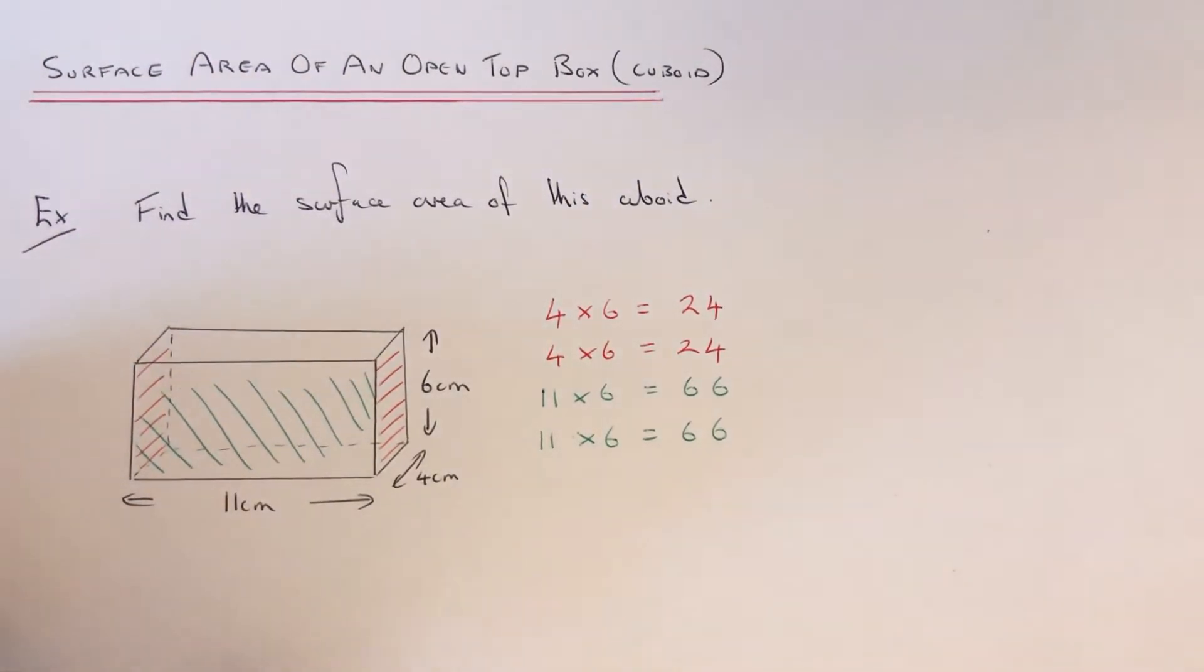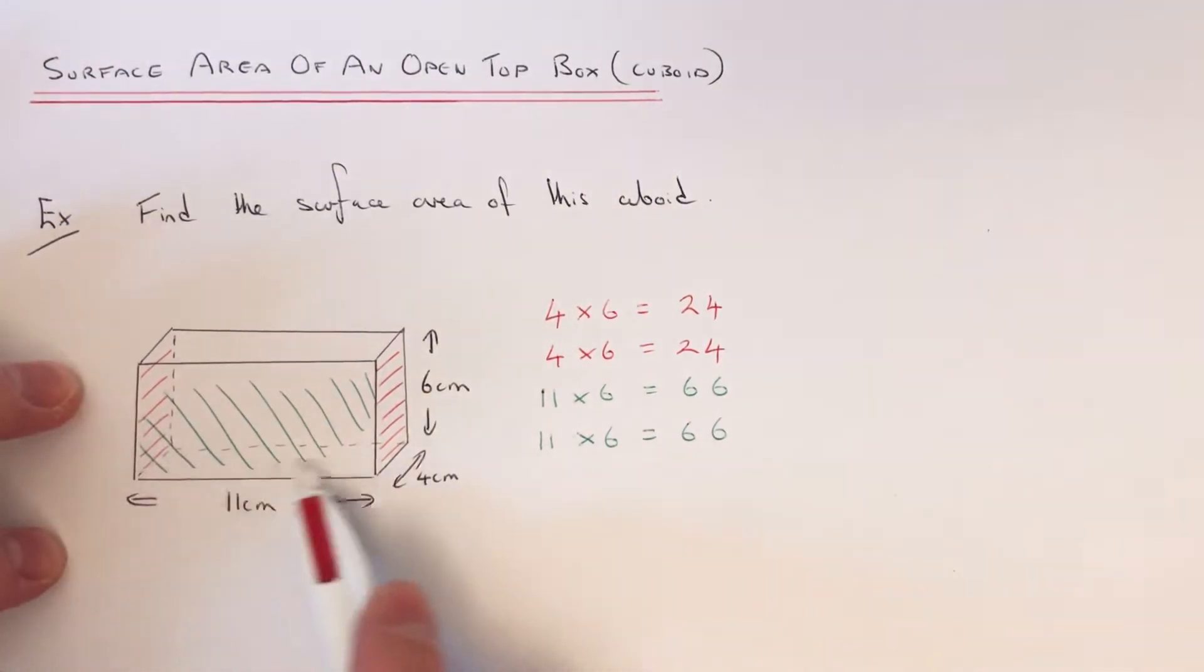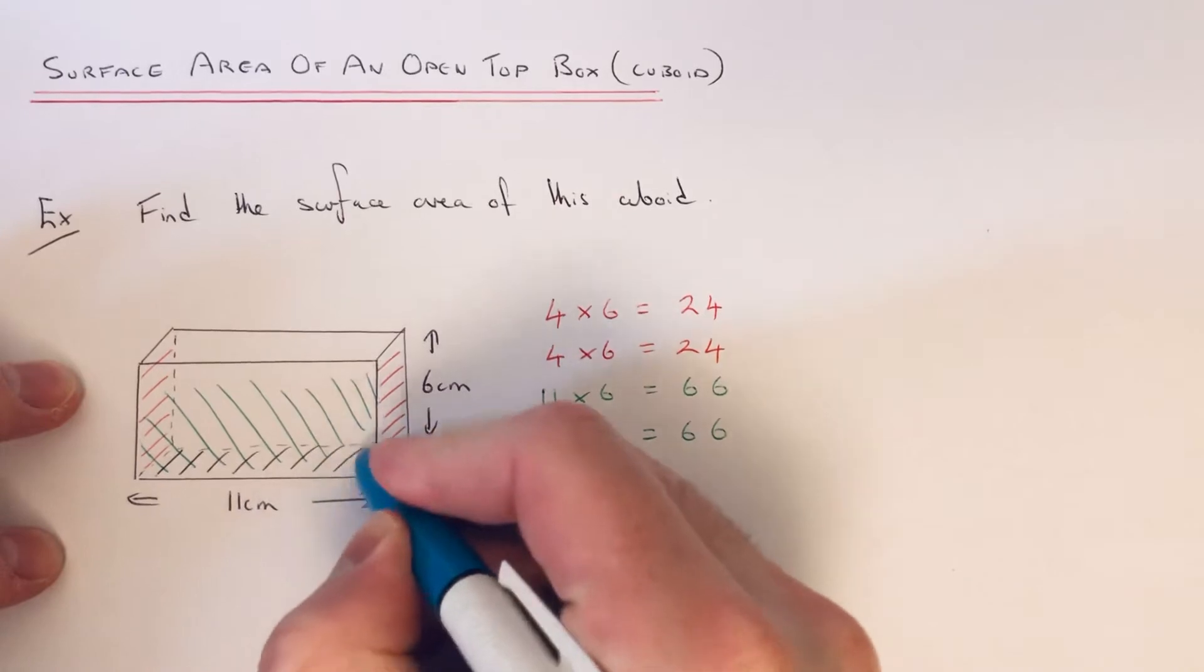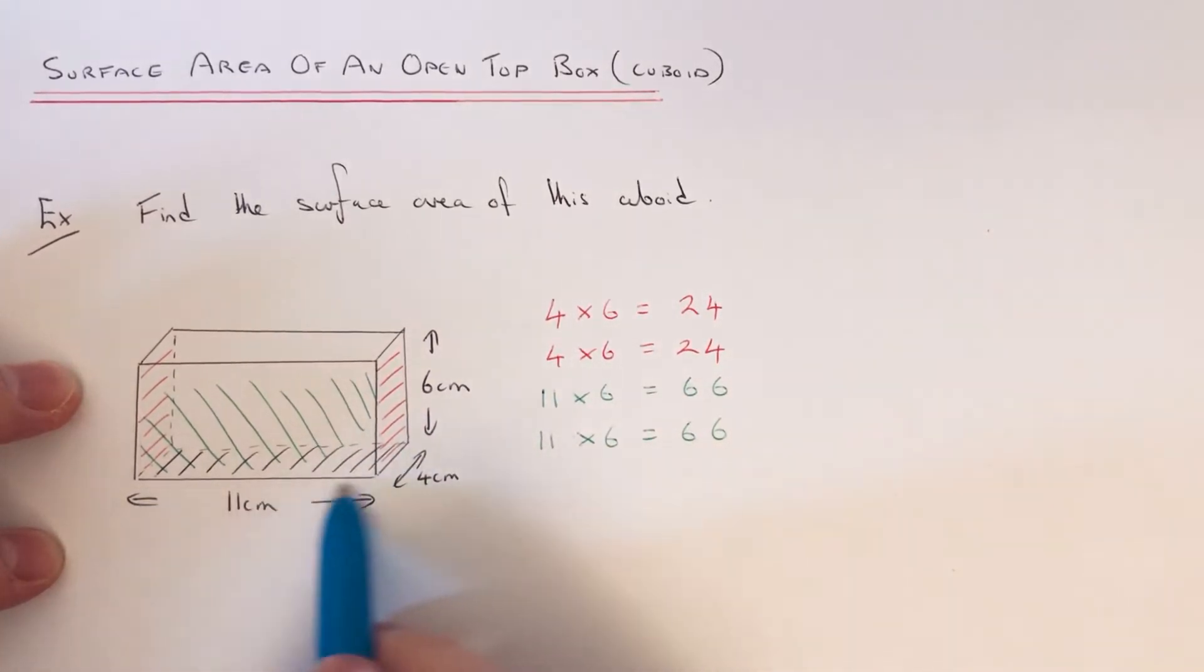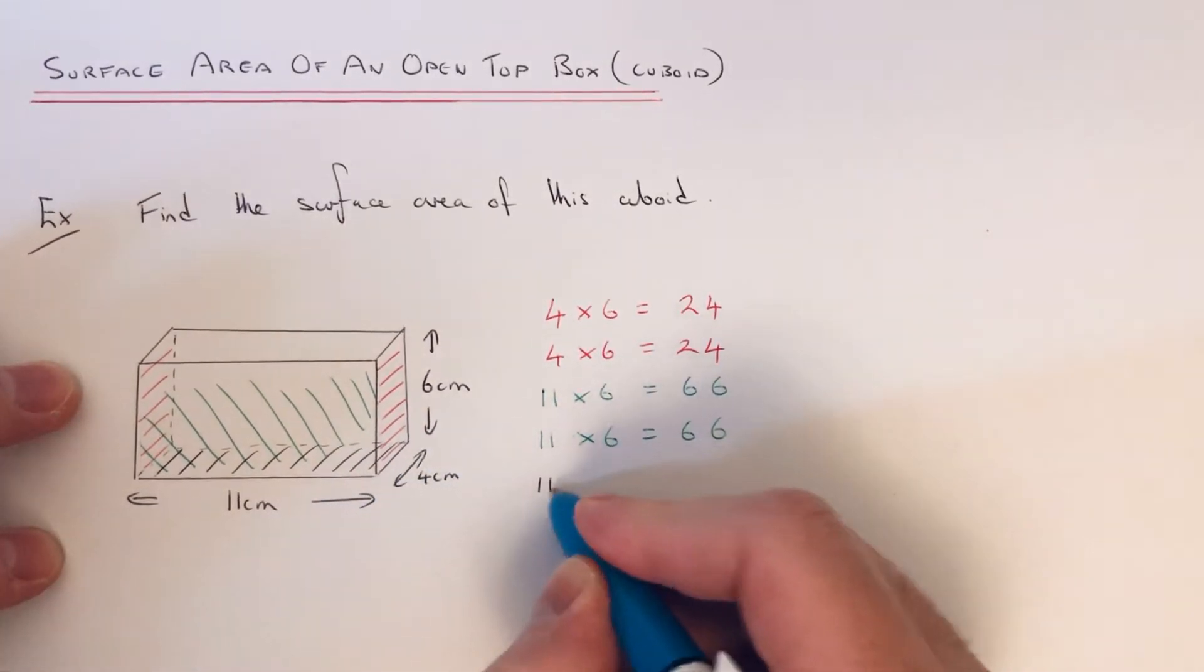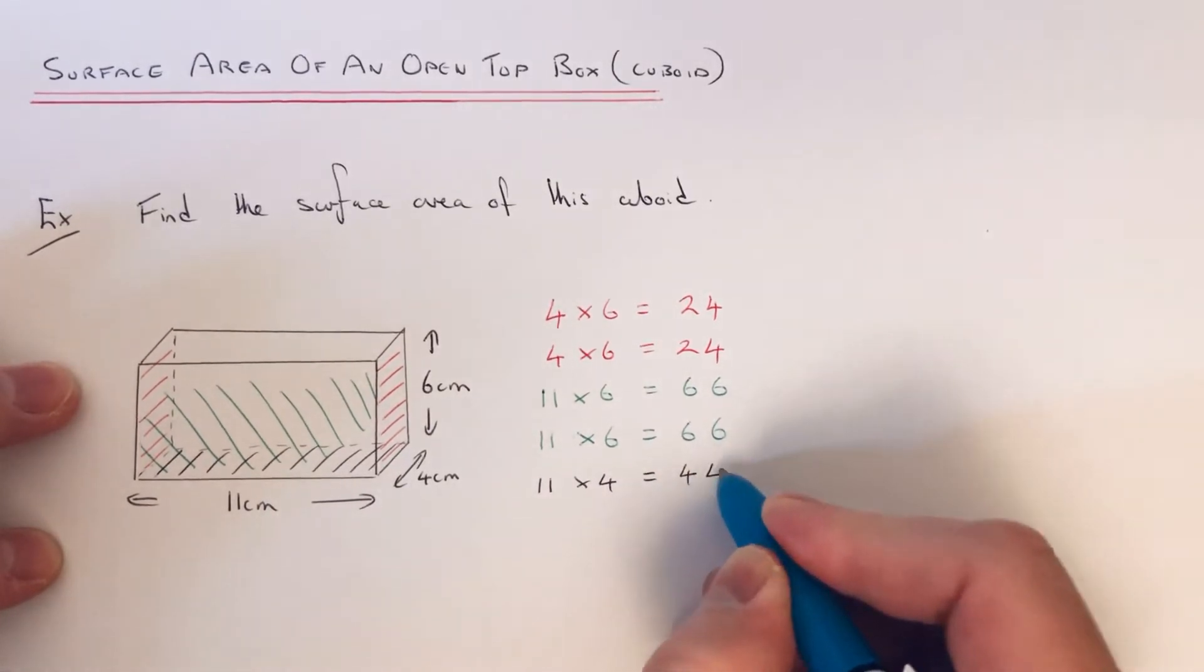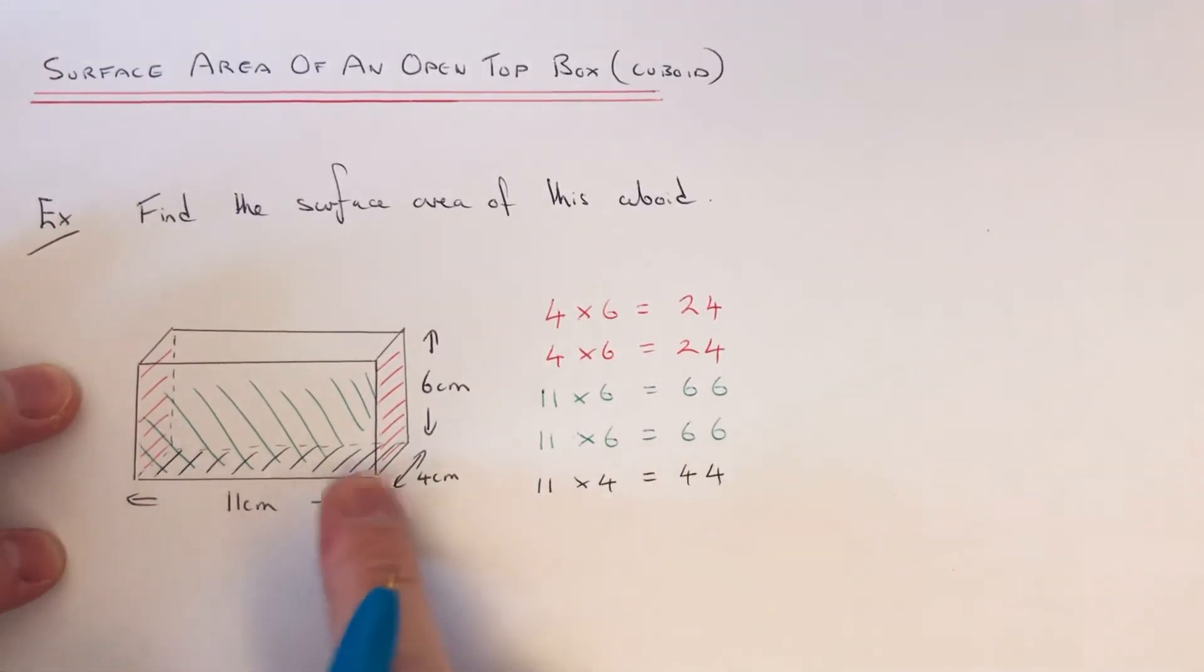So we now have to be careful. We just need to work out the area of the bottom rectangle. So this one will be 11 by 4, so that is 44. So we don't copy this one down again.